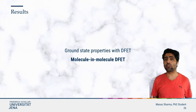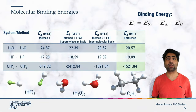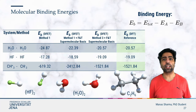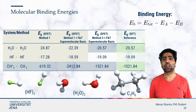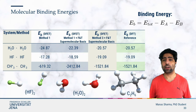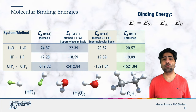To give you an idea about the accuracy one can expect with method 1 and method 3, here are the molecular binding energies obtained using molecule-in-molecule DFET. Bear in mind that these are DFT-in-DFT results and only serve as a benchmark, so the results can only be as good as DFT. For the weakly interacting HF and H2O dimers, method 1 with or without freeze-and-thaw or a supermolecular basis gives reasonable accuracy. For strongly interacting systems — for example, the ethane molecule partitioned at the C–C covalent bond — the errors are really large. Method 3, on the other hand, gives exact results for weakly or strongly interacting systems, provided freeze-and-thaw and a supermolecular basis are used.